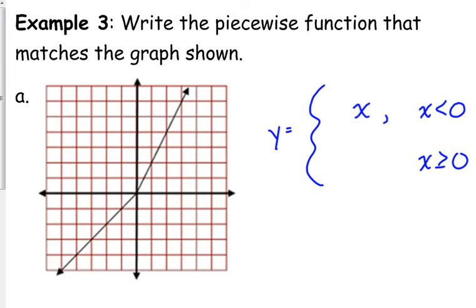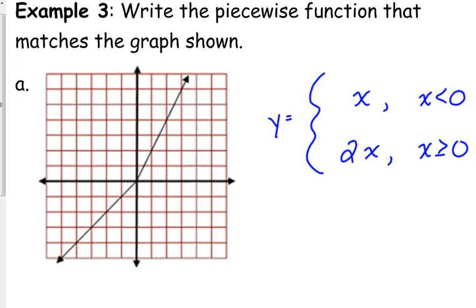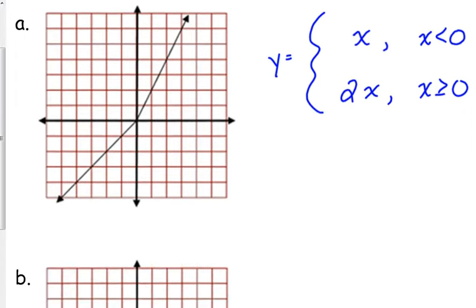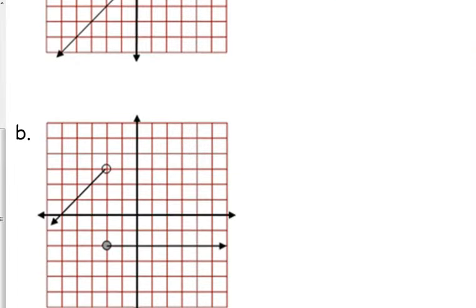The other one, it's going to be 2x. Slope of two goes through the origin. That one's pretty elementary. Y'all like this, right? That one's easy.